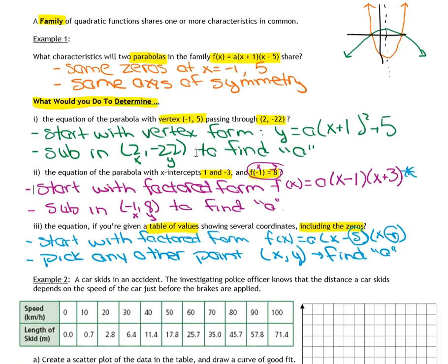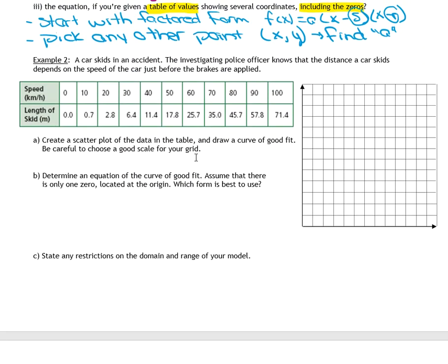Let's scroll down here and look at example two. A car skids in an accident. The investigating police officer knows that the distance a car skids depends on the speed of the car just before the brakes are applied. So we've got a chart already with speed. This is the speed of the car along the top and the bottom is the length of the skid in meters. And there's a direct relationship. There is a relationship between speed and length of skid. That's how the investigating officers figure that out. They know that there's a connection. We're going to create a scatter plot of the data in the table and then we're going to draw a curve of good fit in there. And be careful to choose a good scale for your grid.